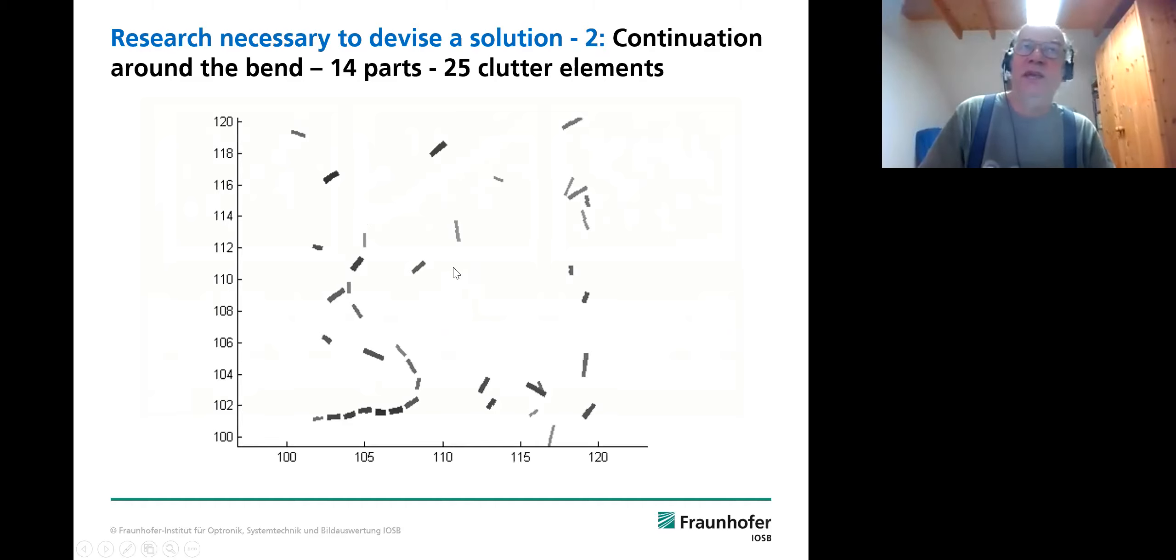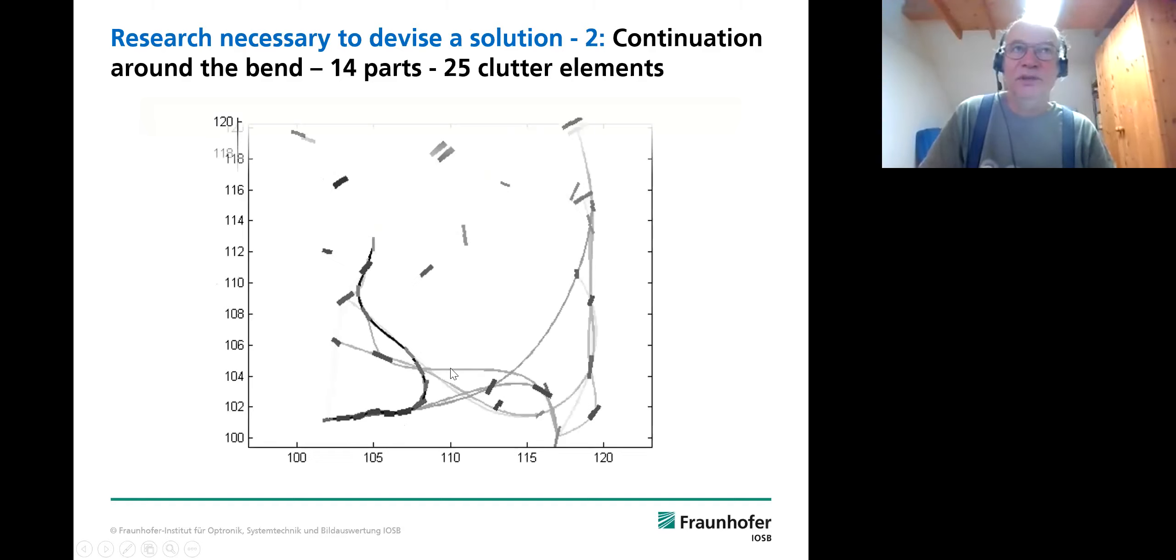So yeah, you have oriented elements. Some of them come from a foreground model, which is in this case, a good continuation somehow around the bend. And most of them are clutter. And then you devise a method which finds the foreground groupings like this one. And you investigate whether that is consistent with your own perception and even better with the perception presented to a group of test subjects.